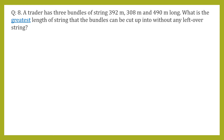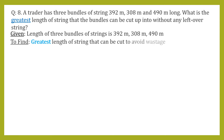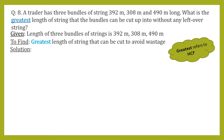The lengths of the strings are 392 meters, 308 meters, and 490 meters. What is the greatest length of string that the bundles can be cut into without any leftover string? The lengths of the three bundles are 392 meters, 308 meters, and 490 meters. We have to find the greatest length of string such that when we cut the string from the bundle there is no wastage.